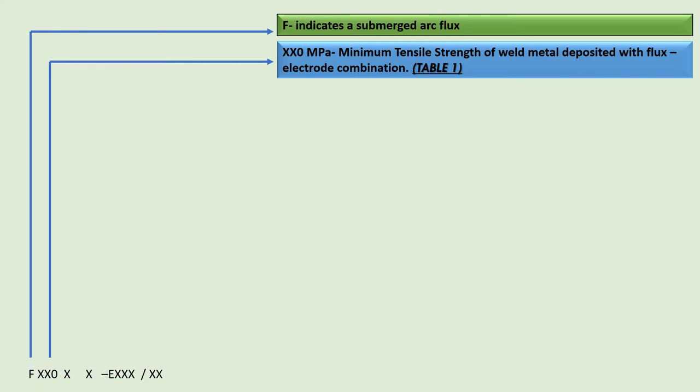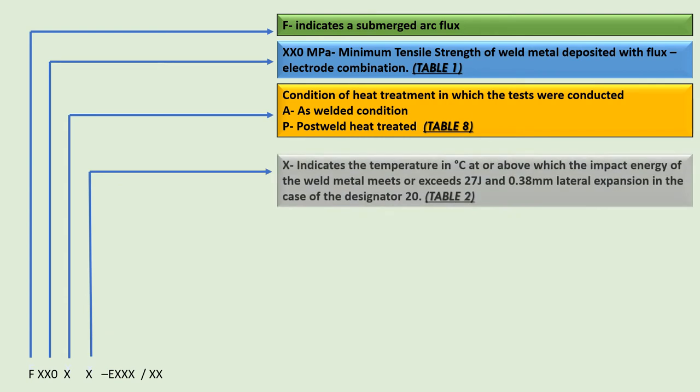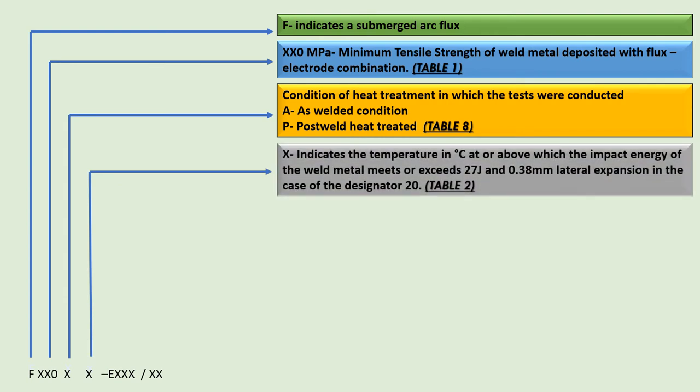The tensile strength details are given in SFA 5.39 Table 1. After that, we have an alphabetic designator which indicates the condition of heat treatment in which the tests were conducted: 'A' indicates as-welded condition, and 'P' indicates post-weld heat treated condition. Table 8 in SFA 5.39 gives details about this.